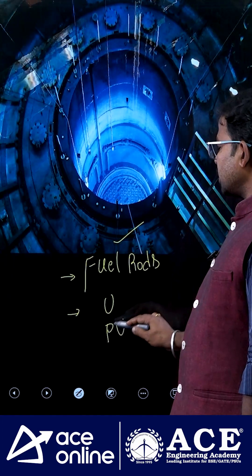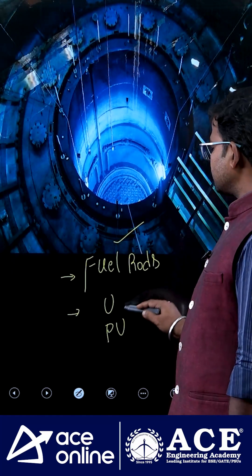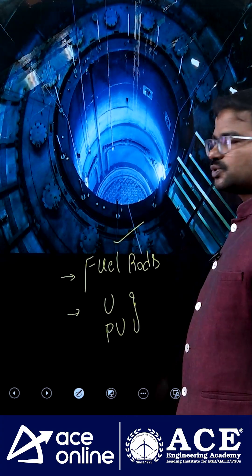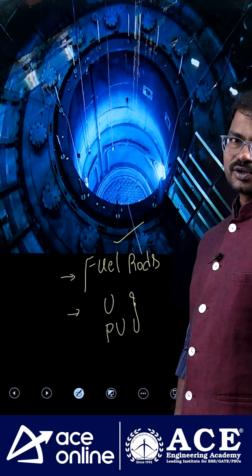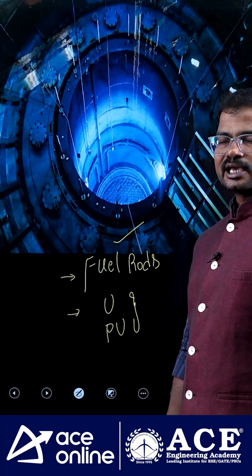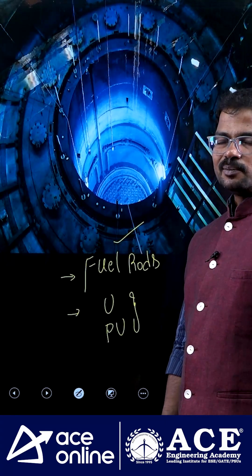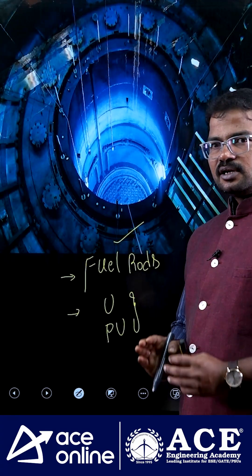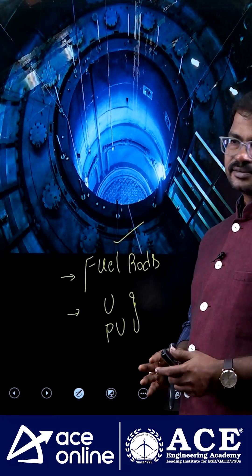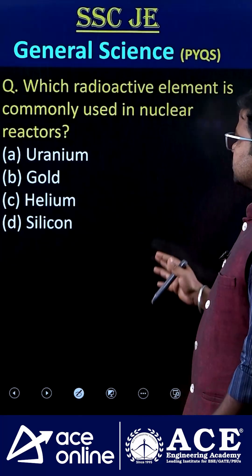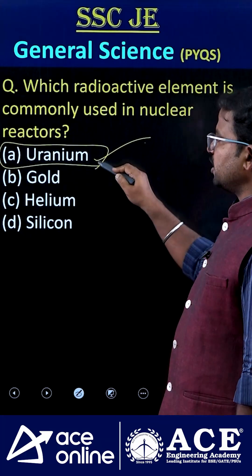In some reactors, plutonium can also be used. Especially in India, we are using these two types — uranium as well as plutonium. Of course, we have a bulk amount of thorium reserves, even though thorium-based reactors are not yet operational. So the correct answer is option A.